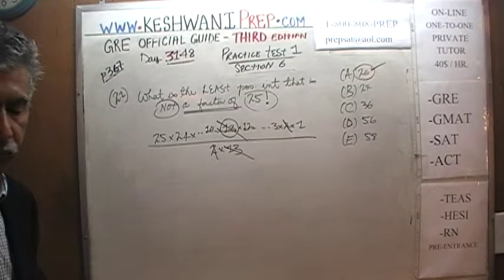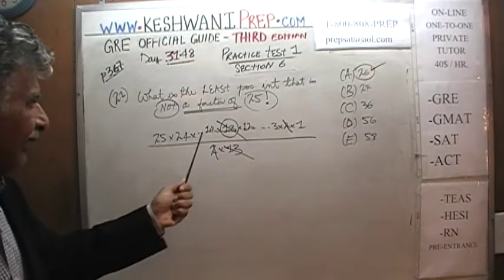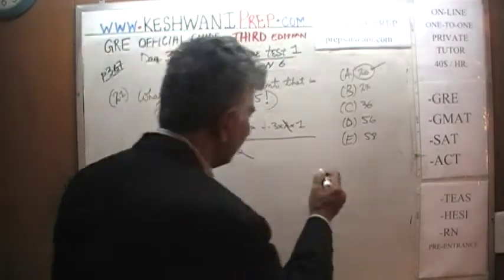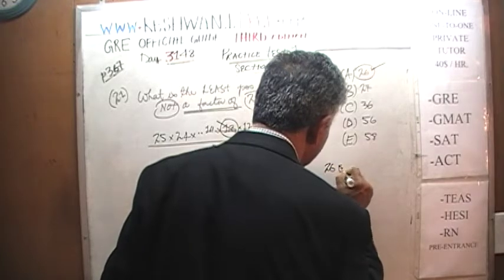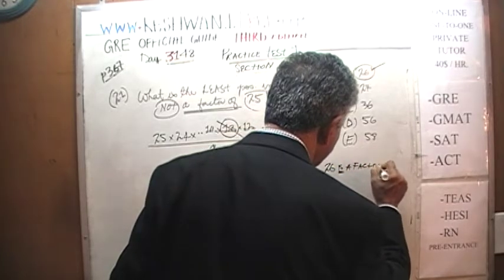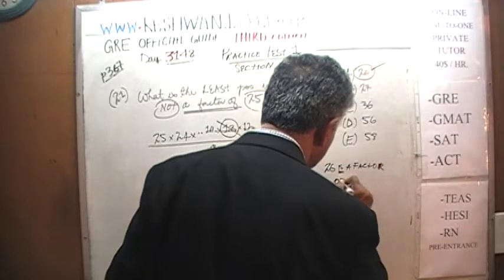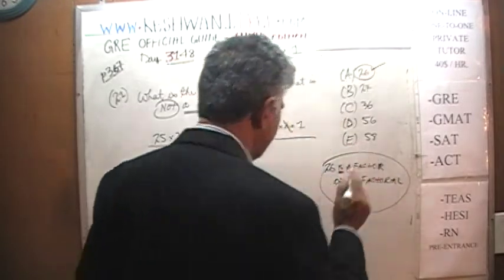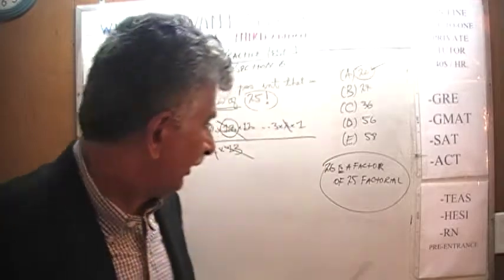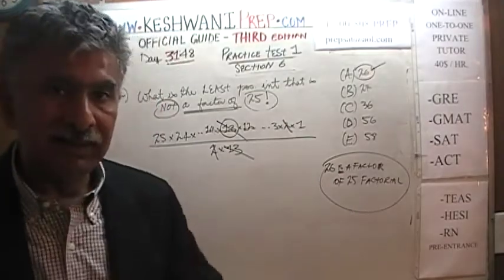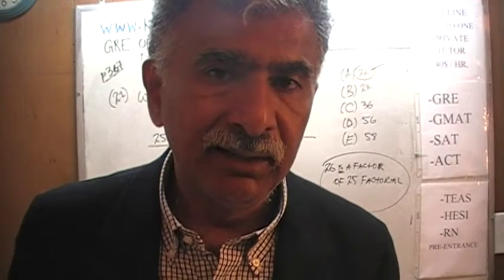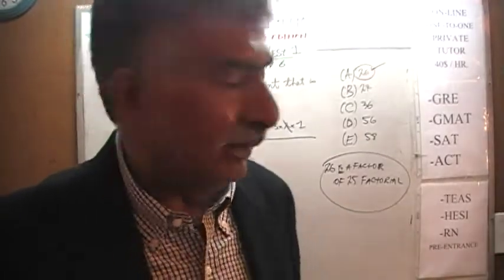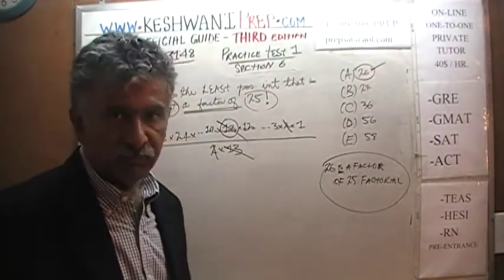We're not going to multiply it all out — we don't need to know what the exact number is. We just read it as 25 factorial. So 26 is a factor of 25 factorial. That's just a mathematical way of saying that 25 times 24 times 23, all the way down to 1, is evenly divisible by 26, as we just saw.